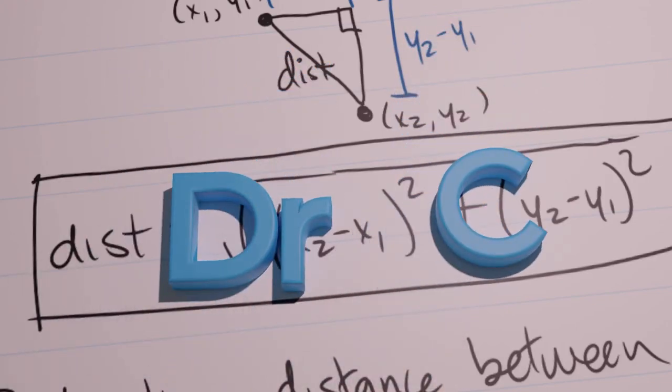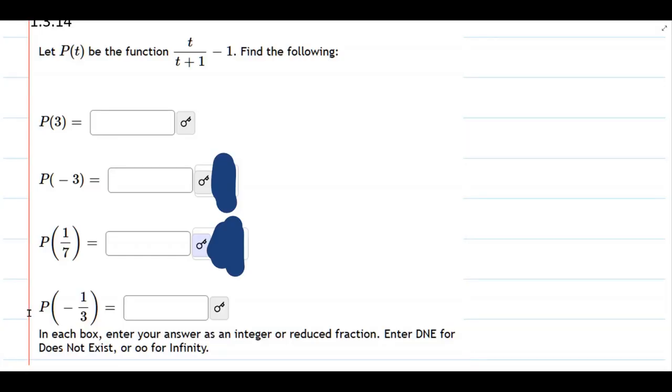So this problem we have a function P and it's t over t plus 1 minus 1 outside the fraction. I'm only going to do the negative 3 and the 1/7th and we'll go with the negative 3 first.